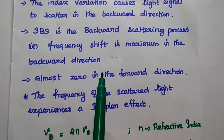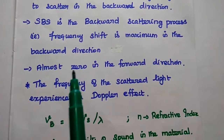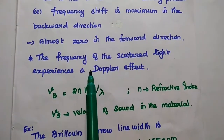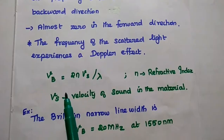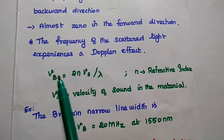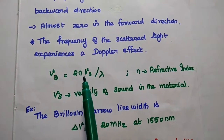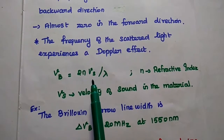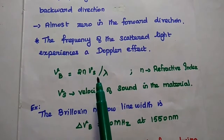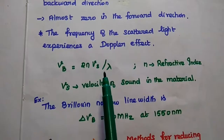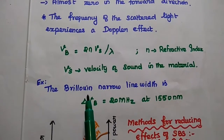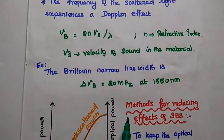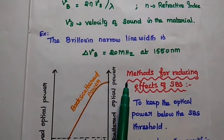The frequency shift in SBS is maximum in the backward direction and almost zero in the forward direction. This frequency shift is the Doppler shift, expressed as: VB (Brillouin frequency) = 2NVS / λ, where λ is the wavelength of light in the fiber, VS is the velocity of sound in the material, and N is the refractive index. The Brillouin narrow linewidth is given as ΔVB = 20 MHz at 1550 nm.